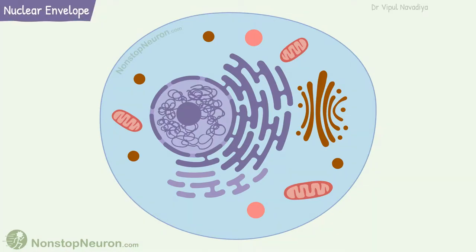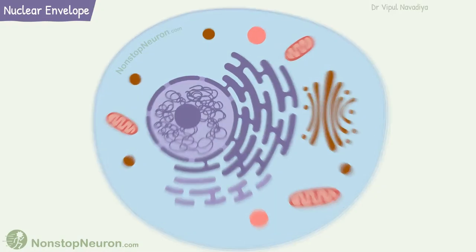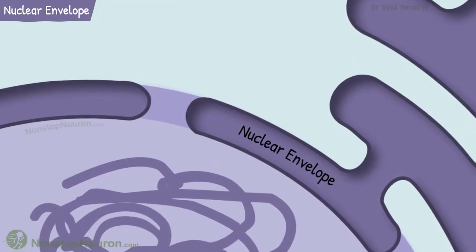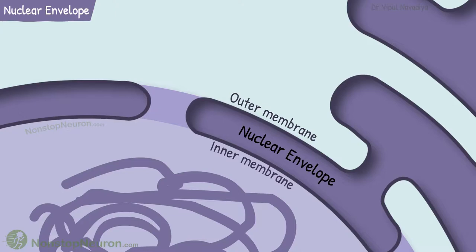First, let's see the nuclear envelope. As per the name, it covers the nucleus. It is made up of double layers: an outer membrane and an inner membrane.